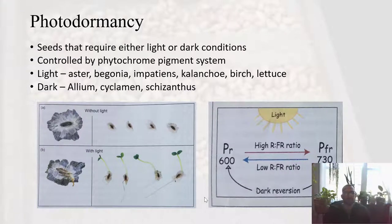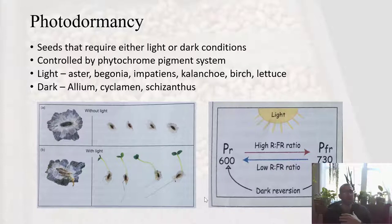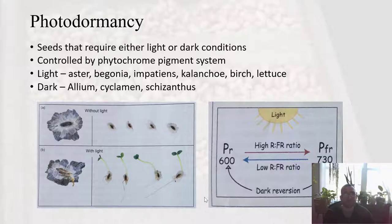Some seeds also have photodormancy — they either require light to germinate or require darkness. This is controlled by the phytochrome pigment system. Examples of plants that require light to germinate are asters, begonias, impatiens, kalanchoe, birches, and lettuce. Whereas alliums — garlic, onions — require darkness to germinate.